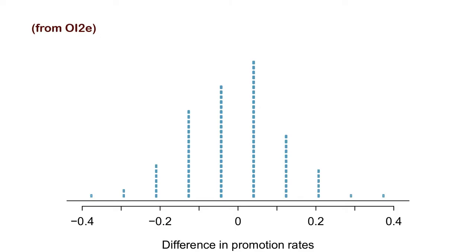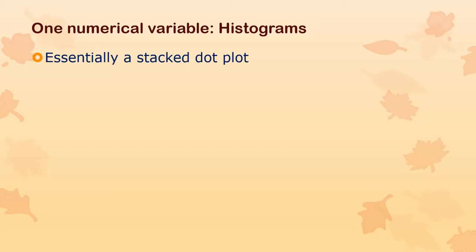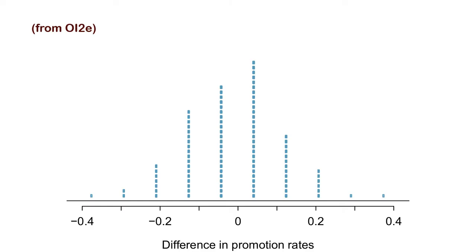Here's a stacked dot plot showing difference in promotion rates. Every one of these dots is one observation in the data set. This is the highest observation, this is the lowest, and you can see the most frequent observation. It's kind of an odd arrangement of data. And if we take that one step further — if we stack those dots and smoosh them all together — then we have a histogram. So it's a stacked dot plot, but the dots are all square, like stacking blocks tightly, which makes bars.